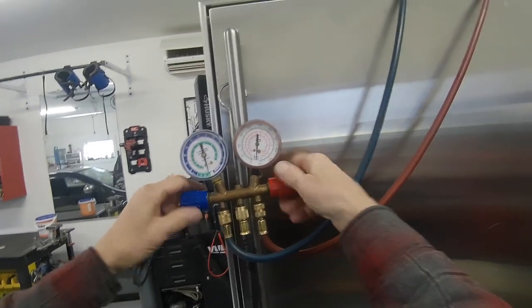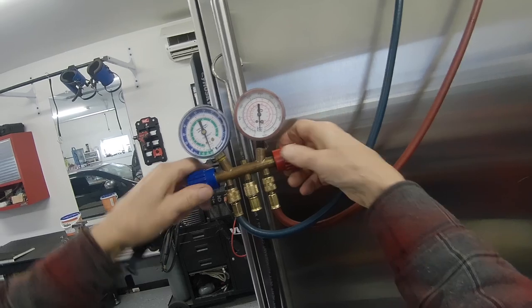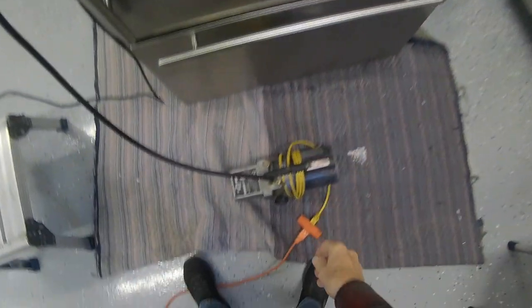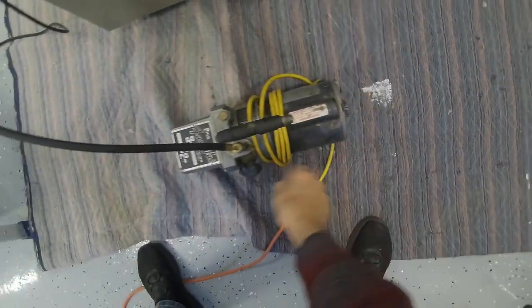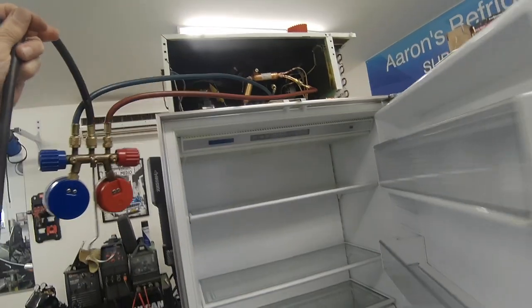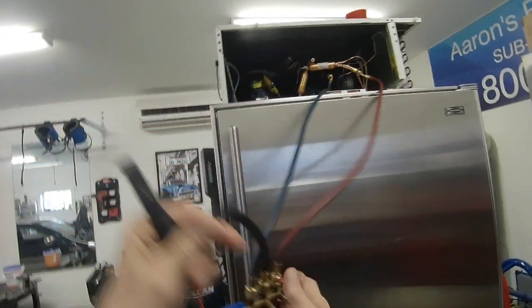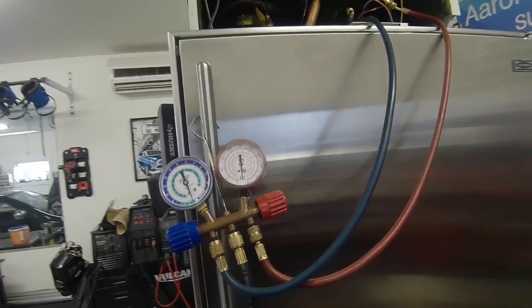Okay, we're looking good here. Shut this down. Alright, we got eight ounces of 134A. This has the original evaporator coil in it, so we're going to weigh in eight ounces.